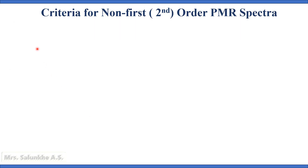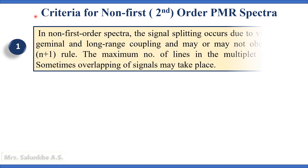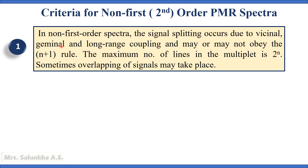Now we see the criteria for non-first order spectra or second order spectra. The first criteria is that in non-first order spectra, the signal splitting occurs due to vicinal, geminal, and long range coupling and may or may not obey the N plus 1 rule for splitting. The maximum number of lines in a multiplet is 2 raised to N. Sometimes overlapping of signals may take place in non-first order spectra.